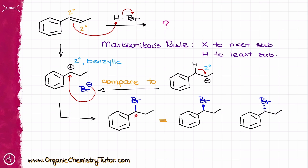If I wanted to give the R and S stereodescriptors: the one on the left is going to be the S stereoisomer, and the one on the right is going to be the R stereoisomer. The relationship between my two molecules is going to be enantiomers.